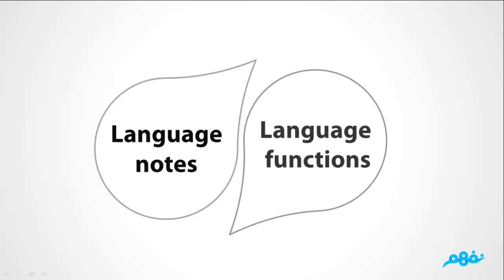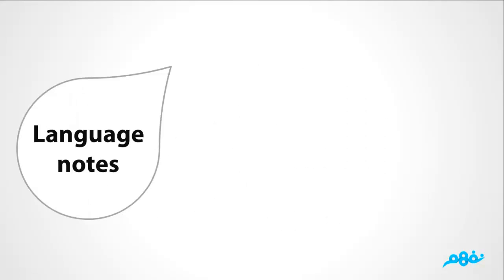Language nodes, language functions. In this unit we are going to know the difference between some words. First, the difference between job and work. Job is a countable noun — it can be used in the plural form and it always refers to the name of the job.